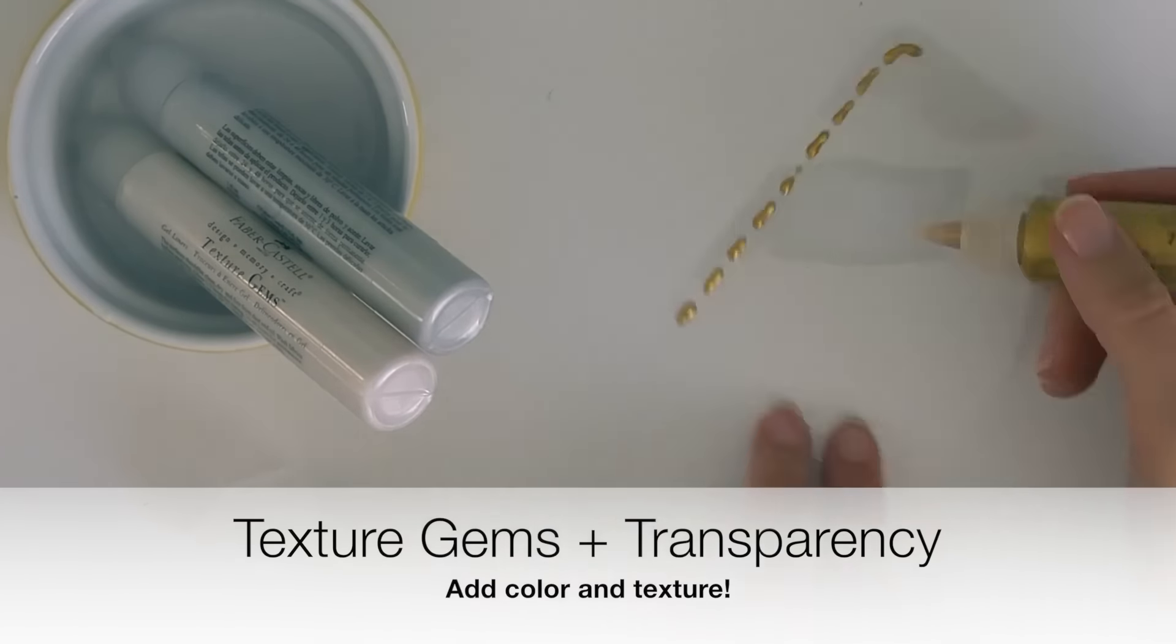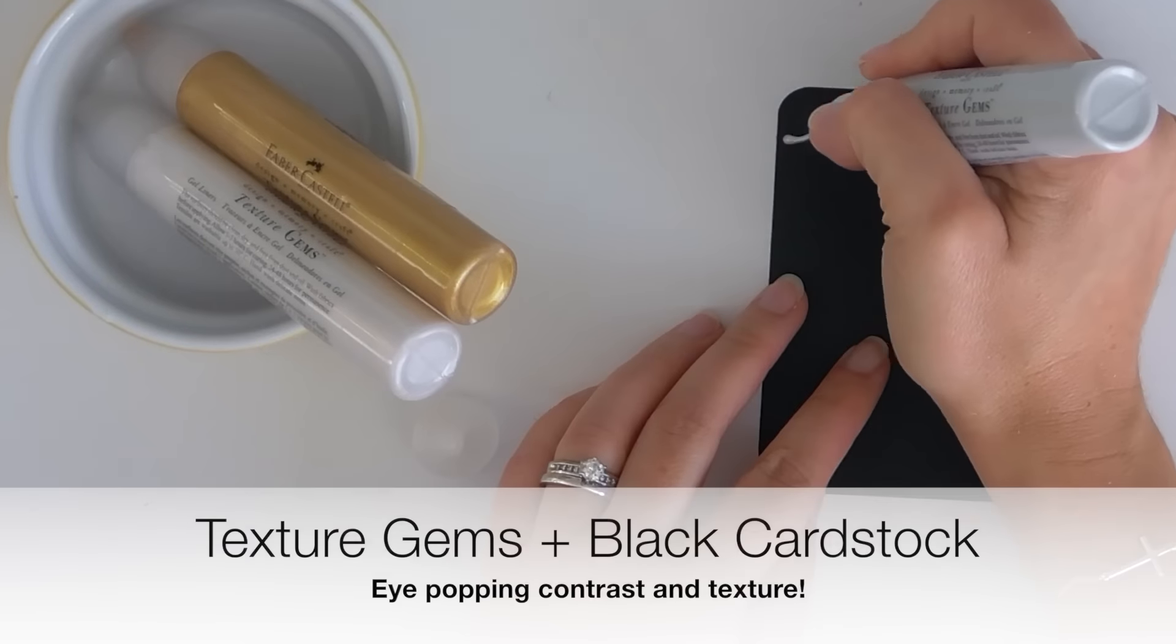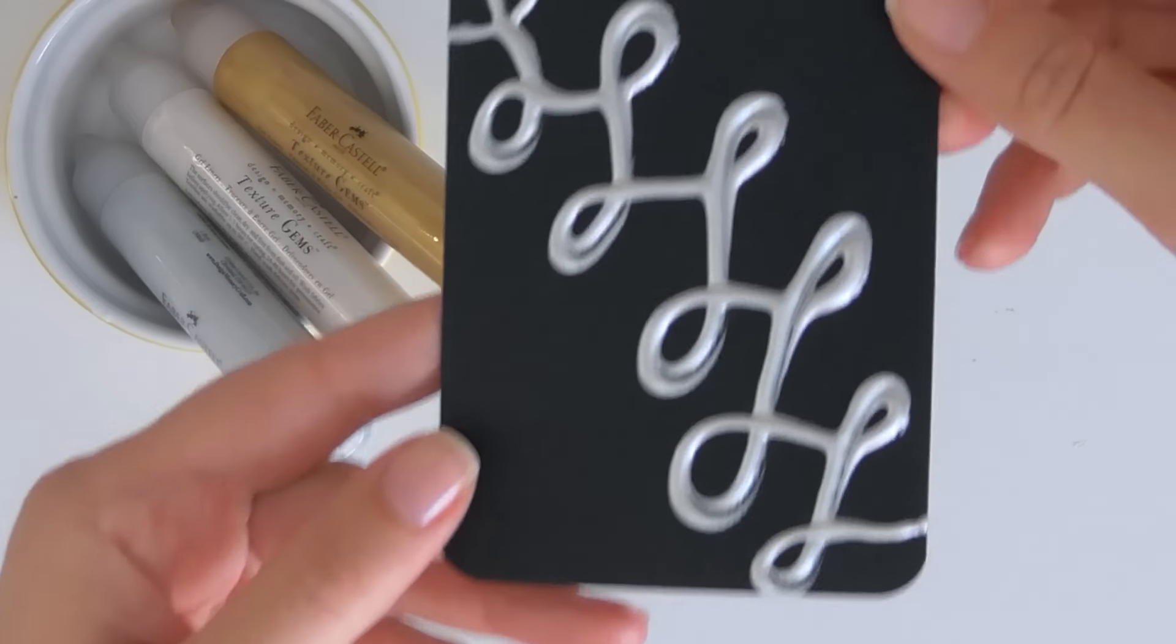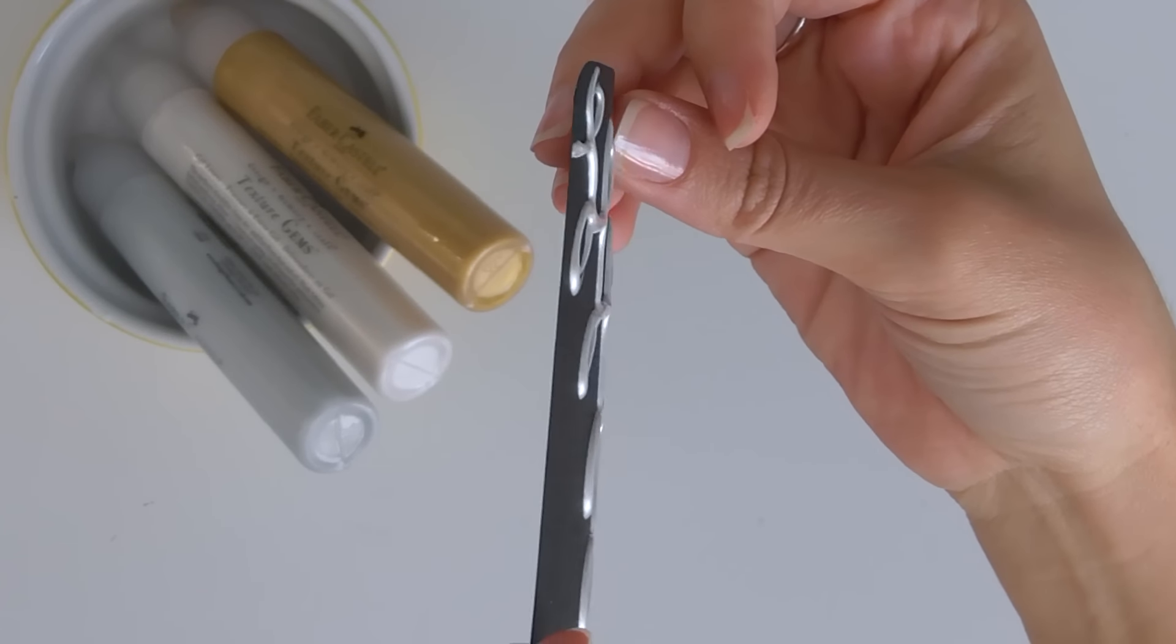It's really fun to add it to transparencies as well. Using texture gems on black cardstock is really fun because it has such a high contrast. And when you put it on really thick like I did for this card, it has a lot of dimension.